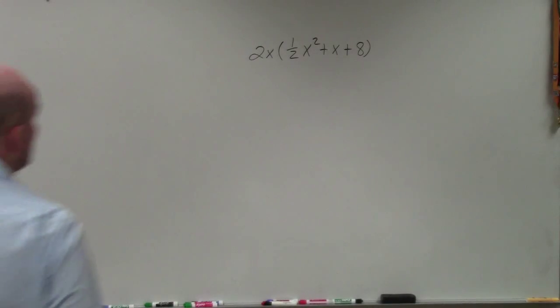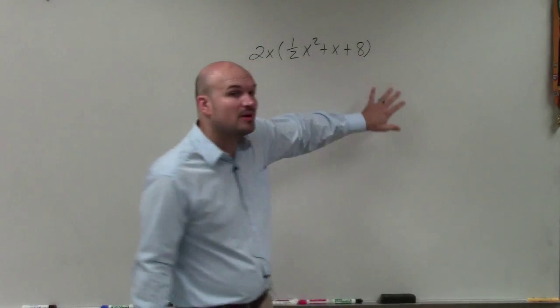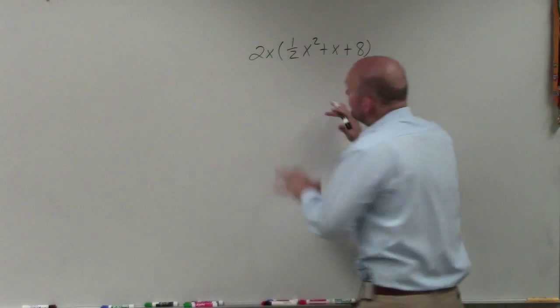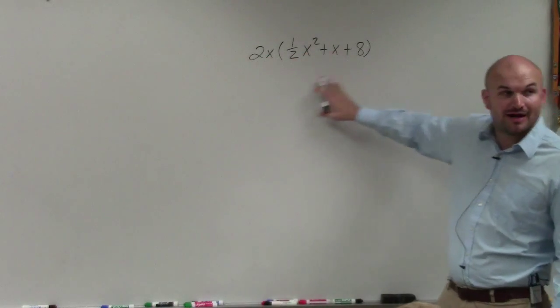So for a problem like this, now what we're going to do is apply the distributive property. And the main important thing is now we're multiplying a monomial times a trinomial.